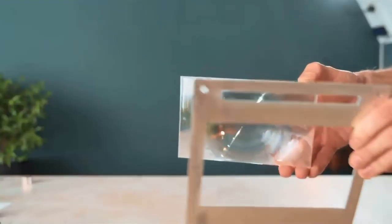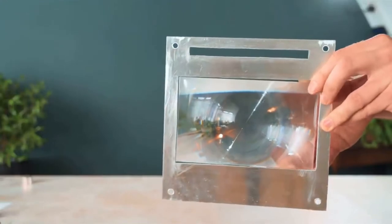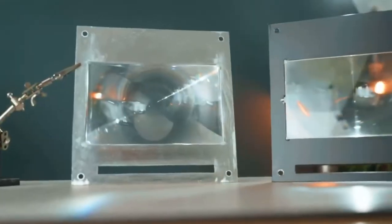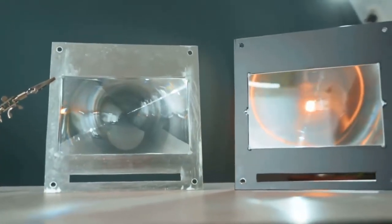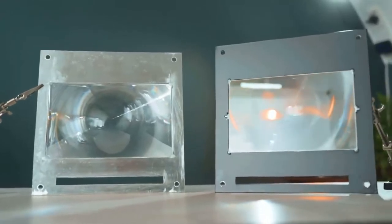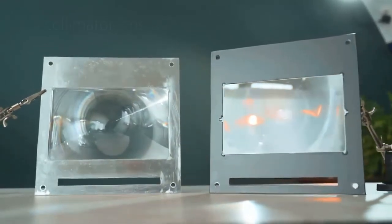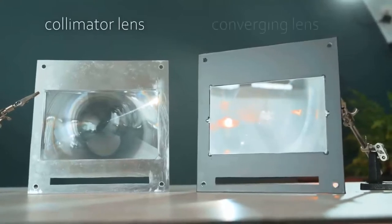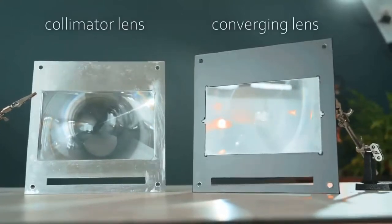Each one needs to be fitted onto its own layer, and again, don't forget the vent slots. Now I've made one of mine black to differentiate it during this video, so the silver one is going to act as the collimator lens, which makes the rays parallel, while the black one is going to act as the converging lens.